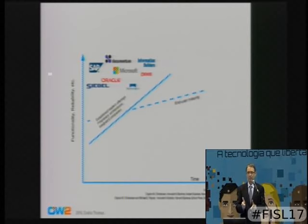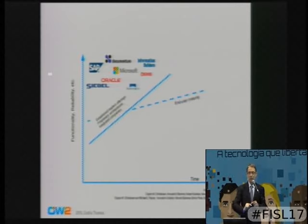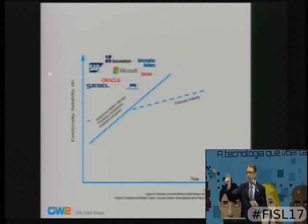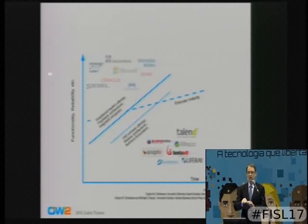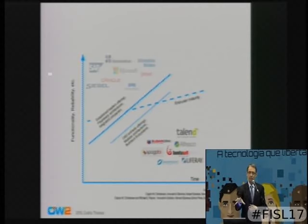They invented the product category, invested, trained the users, and competed not by lowering prices but by adding functionalities — that's what the upward line represents — until they went beyond what users were capable of absorbing and became irrelevant. But having done that, they paved the way for the second generation: open source software vendors, who entered a market already defined with existing standards and existing components. They only had to grab customers. That's how the second layer materialized.